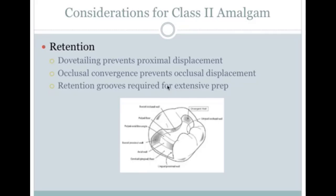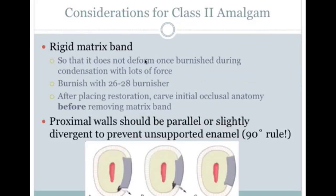For class 2 amalgam, occlusal convergence helps prevent occlusal displacement, but now we also need dovetailing — an area where the prep bends out in one direction to help prevent displacement laterally. You also need a rigid matrix band that can hold its form. An essential step is to put the matrix band on and burnish it against the adjacent tooth so it has a nice contour.